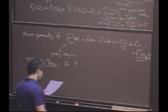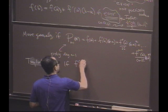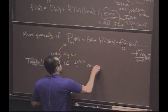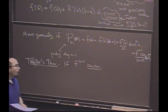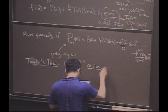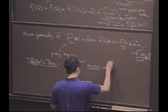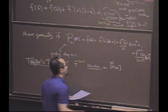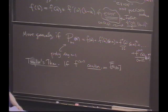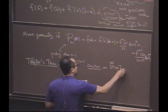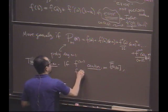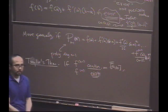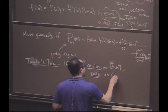So what we're going to demand is that the n minus 1 derivative, the very last one you need, be continuous on [a, b]. And I'm going to demand that the n-th derivative exists. I don't need it to be continuous, but I'll demand that it exists on open (a, b).